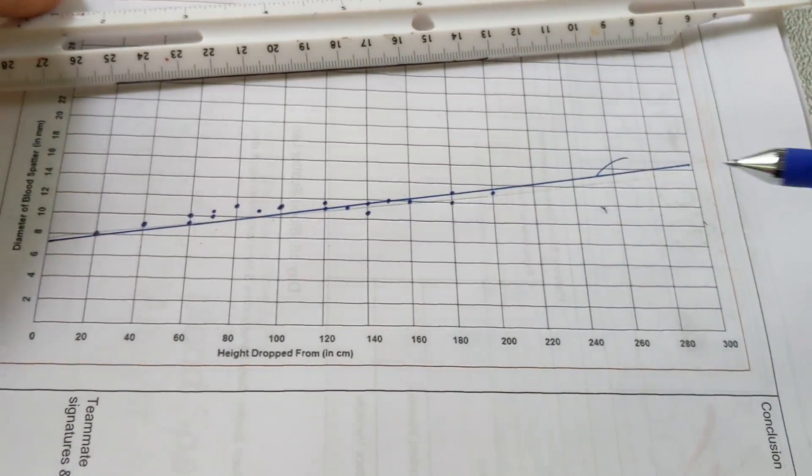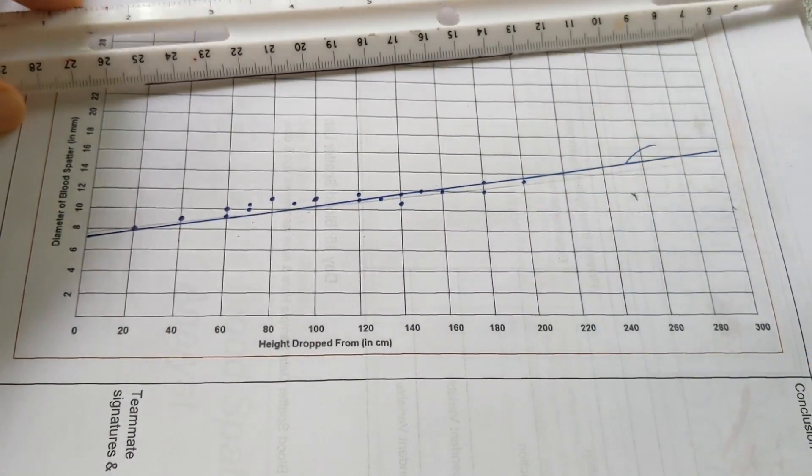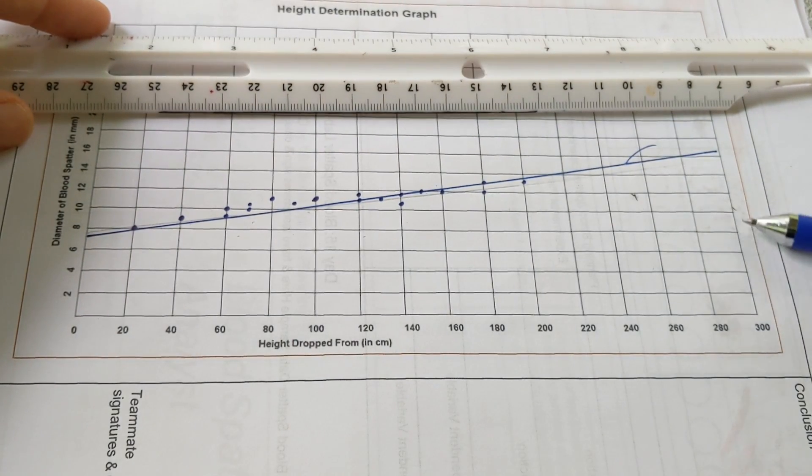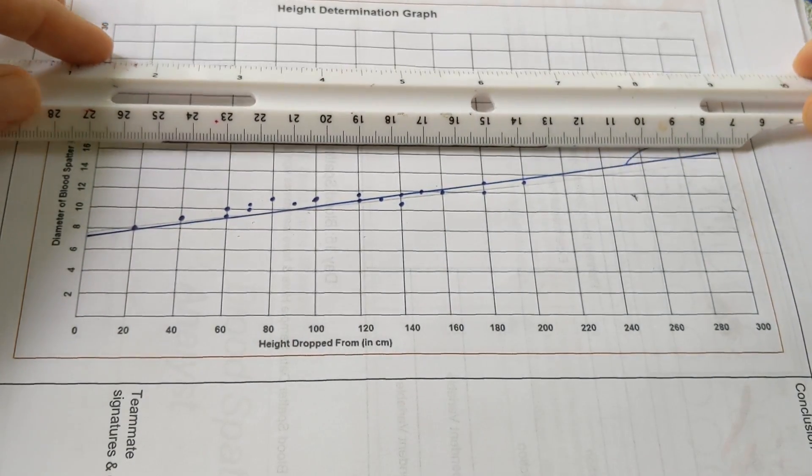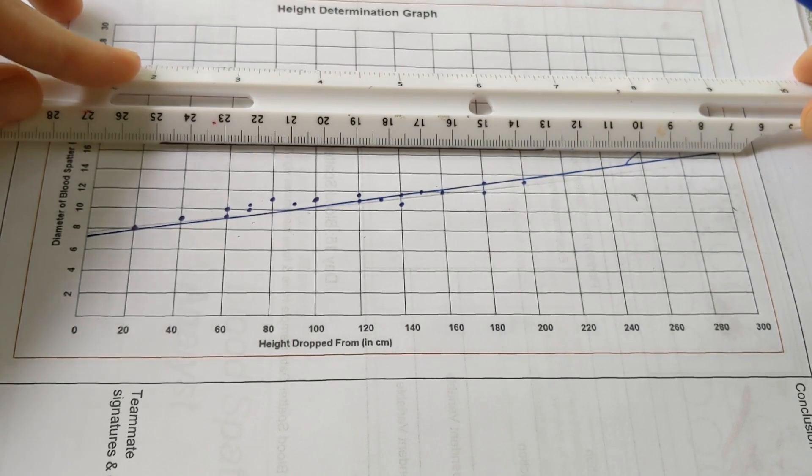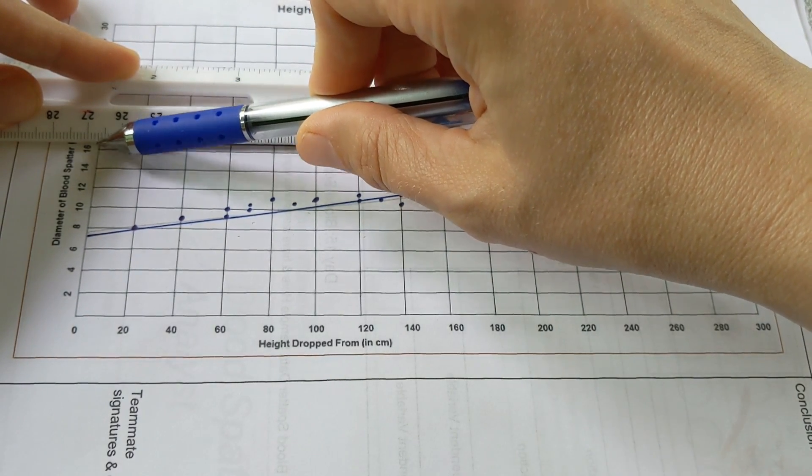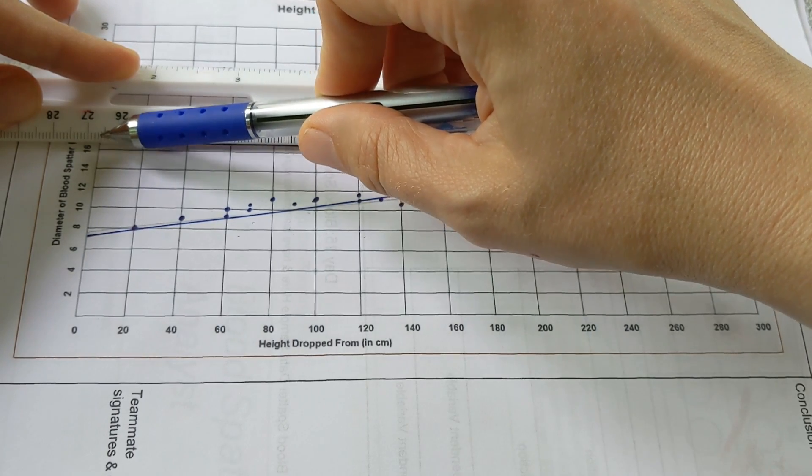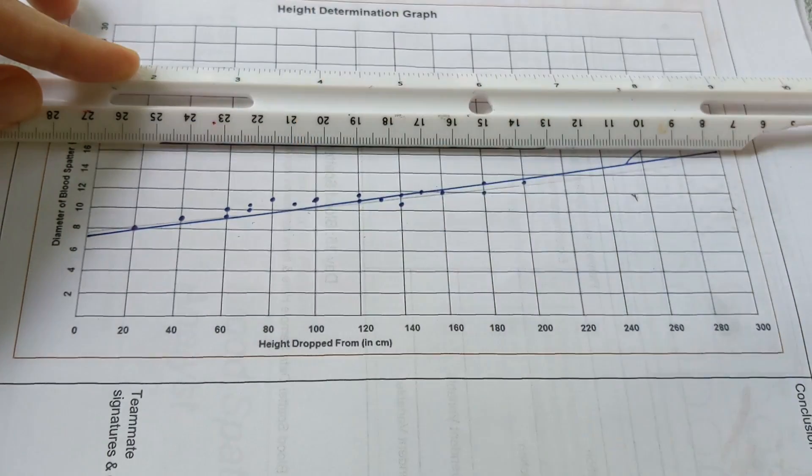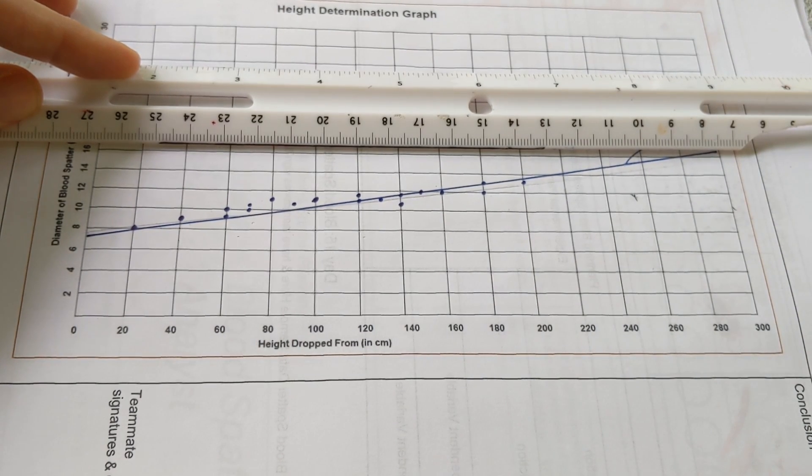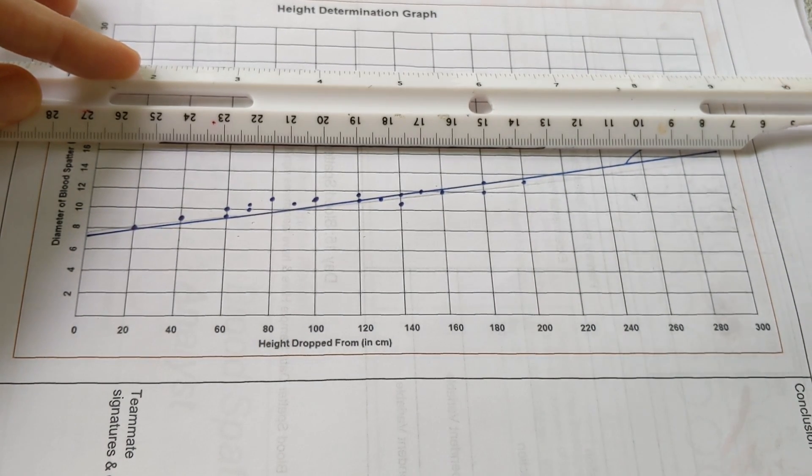The way you use this best fit line is if you have any given height, so let's say we want to do 300 centimeters in height. We go up to the line, and then we go across to the y-axis, and it would be a bit more than 16 millimeters in diameter if we read directly across, so maybe 16.5 millimeters in diameter if we dropped from three meters high.